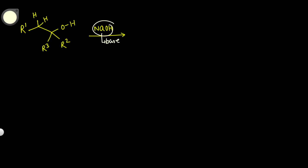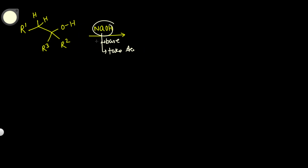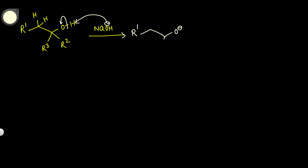The role of the base is to take an acidic proton. In this substrate, the hydrogen on oxygen is the more acidic proton. So the base will take the H⁺ from oxygen. The OH⁻ takes the proton, and you get a negative charge on the oxygen — an O⁻ — with R2 and R3 remaining on the carbon.